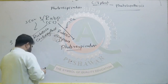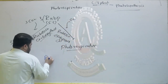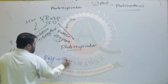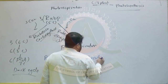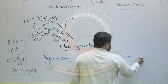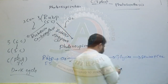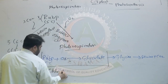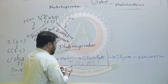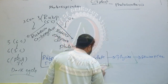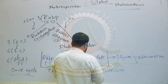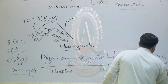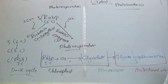In photorespiration, RuBP — the five-carbon compound — combines with the oxygen molecule and changes into glycolate. Glycolate then changes into glycine, and glycine is converted into serine and carbon dioxide. The conversion of RuBP and oxygen into glycolate occurs in the chloroplast. Glycolate to glycine takes place in the peroxisome. Glycine to serine and carbon dioxide occurs in the mitochondria.